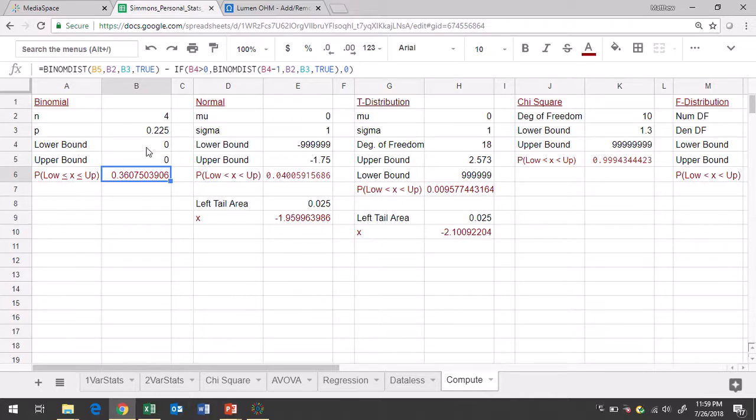Then you'll go and you'll change your lower bound and upper bound to 1. Go ahead and make a note of your answer to four decimal places. Change your lower bound upper bound to 2. Make a note of your answer to four decimal places. And lower bound upper bound will be 3. Take note of your answer to four decimal places. Lower bound upper bound will be 4. Take note of your answer to four decimal places.